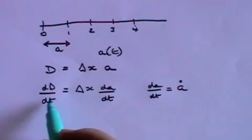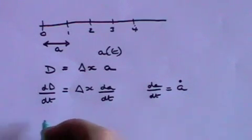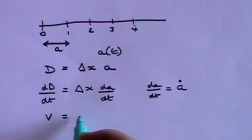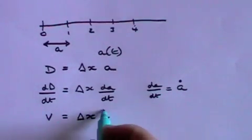But dD by dt, the rate of change of distance with time, is of course just the velocity. And that equals delta x times a dot.